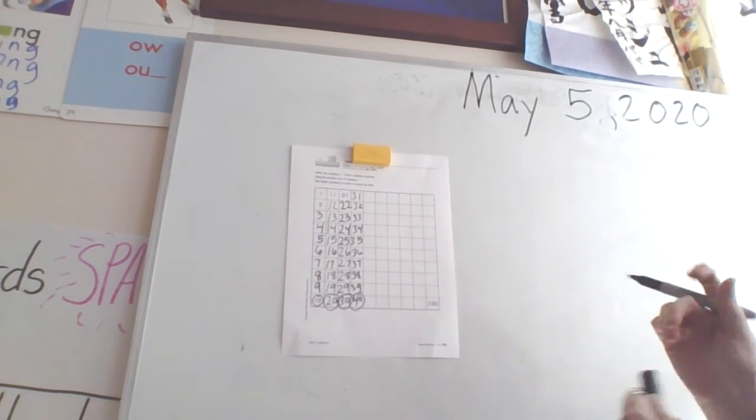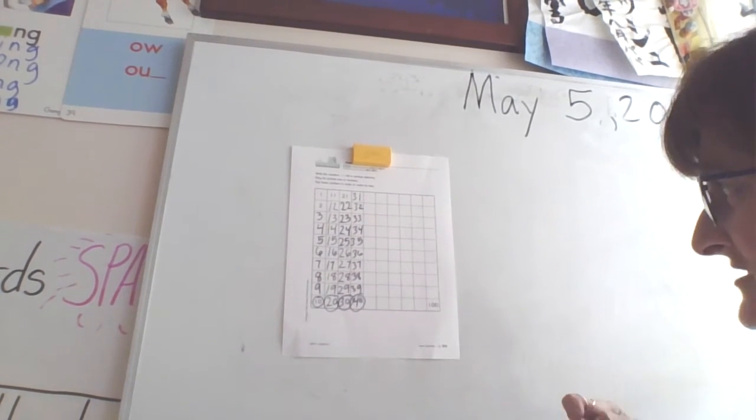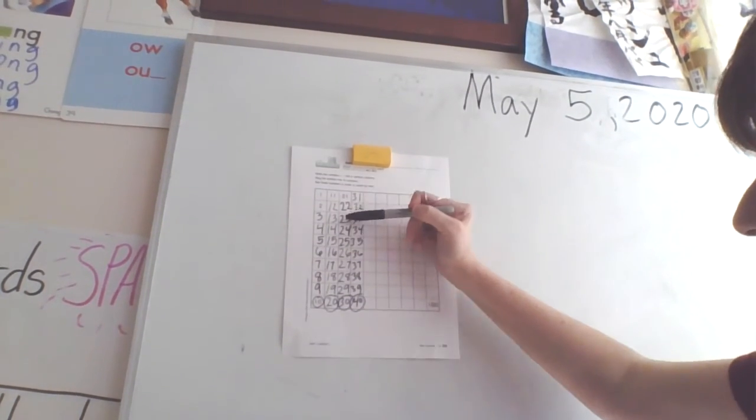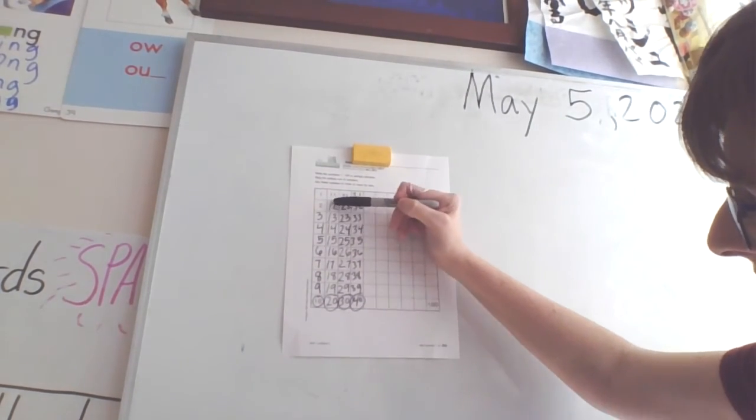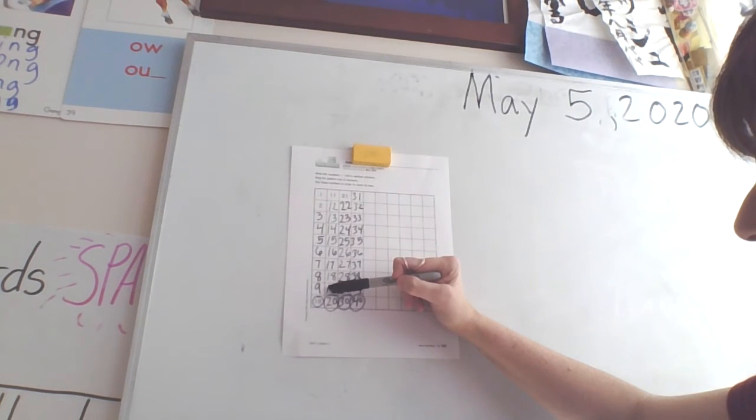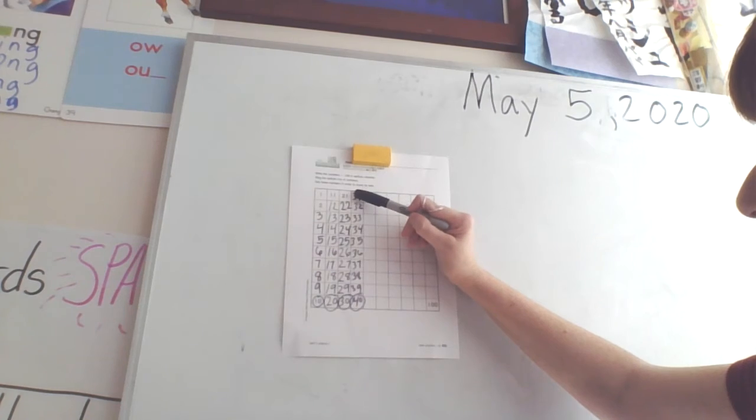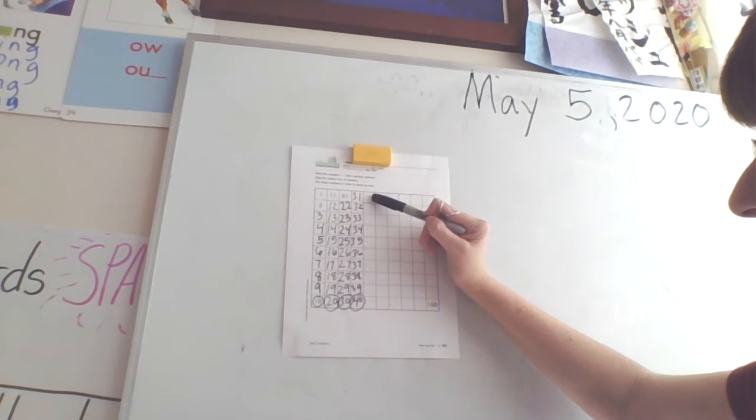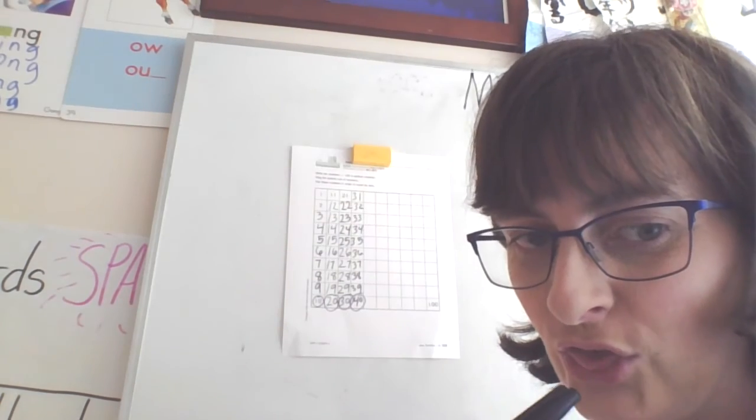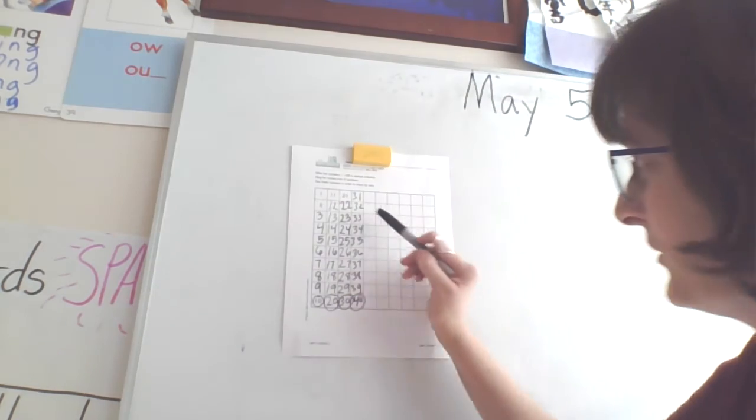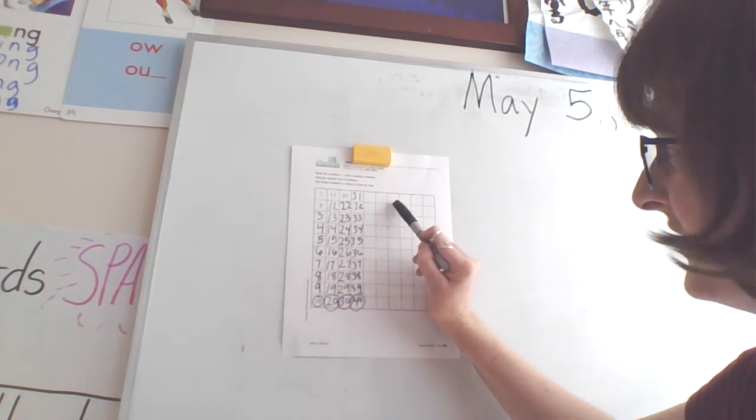Make sure as you're writing, you're saying the numbers. See, the teen numbers have a 1 in front, so this is 13 and this is 31 because the 3 comes in front for 31. You can hear it when I say it: 31, that 3 would come in front.